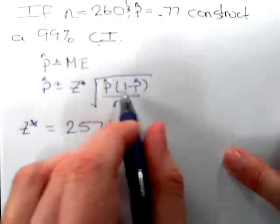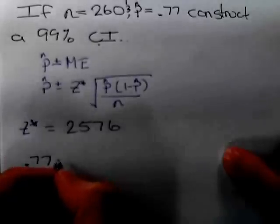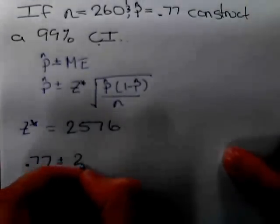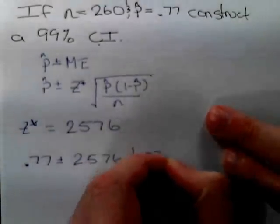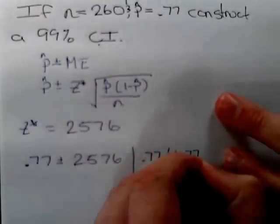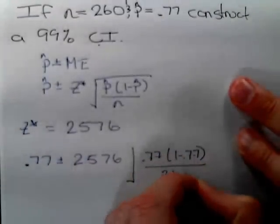Substituting all of these values into the formula, we have p hat is 0.77 plus or minus 2.576 times the square root of 0.77 times one minus 0.77, all over the sample size of 260.